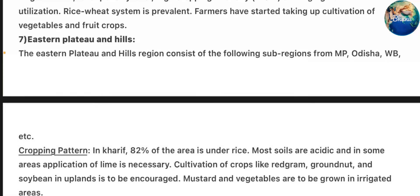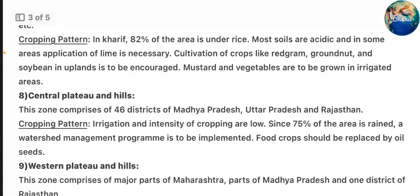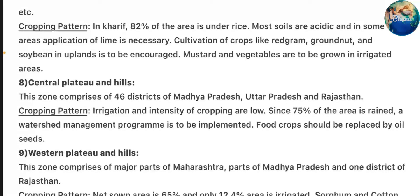Zone 7 – Eastern Plateau and Hills: This region consists of sub-regions from Madhya Pradesh, Odisha, West Bengal, etc. Cropping pattern: in Kharif, 82% of area is under rice. Most soils are acidic and in some areas application of lime is necessary. Cultivation of crops like red-gram, groundnut, and soybean in uplands is to be encouraged. Mustard and vegetables are to be grown in irrigated areas.